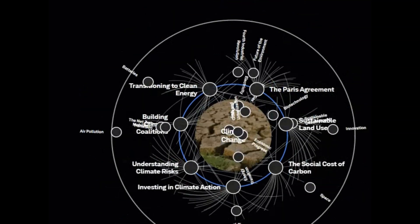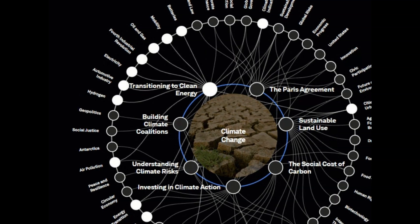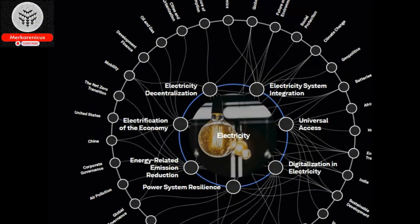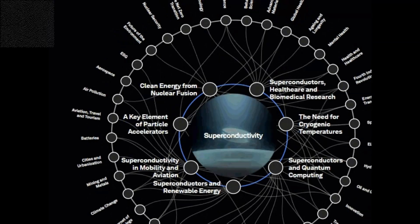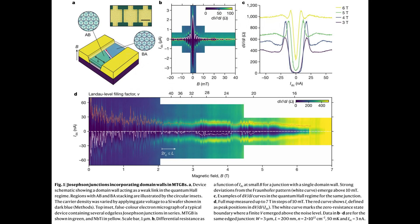The focus of our video centers around a groundbreaking achievement by researchers at the University of Manchester. They have successfully achieved superconductivity in the Quantum Hall regime through the creation of a unique one-dimensional superconductor. This remarkable